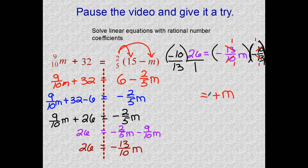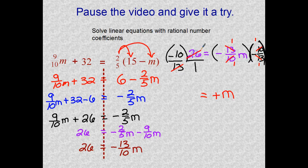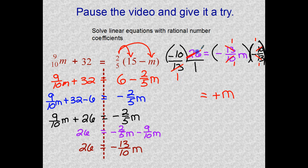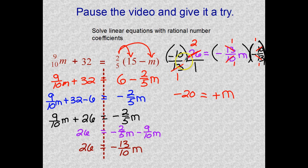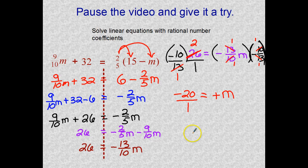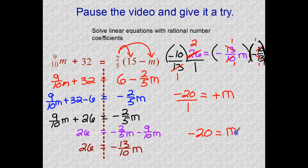Cancel my 13 and my 26. 13 goes into 13 once. 13 goes into 26 twice. And now I have to multiply. The top numerator, negative 10 times 2 is negative 20. And 1 times 1 is 1. So we have a simplified answer of negative 20 is equal to M.